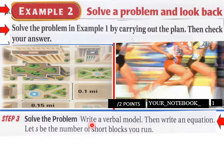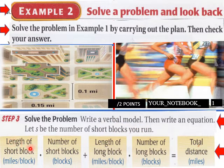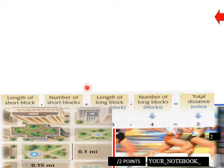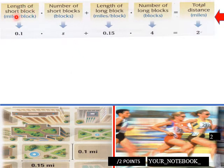Solve the problem, write a verbal model, then write an equation. Let s be the number of short blocks you run. So remember here, the length of short block miles per block times number of short blocks will be blocks, plus length of a long block miles per block times the number of long blocks equals the total distance. So there is our verbal model for the distance that was being run.